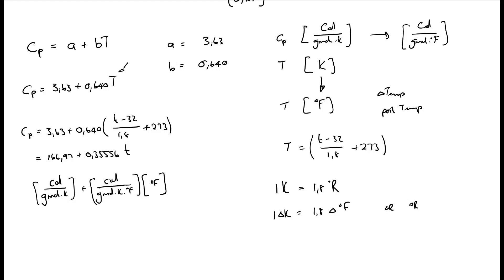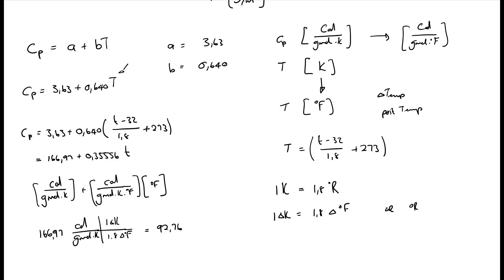To do this last conversion, I now need to say 166.97 calories per gram mole Kelvin. Then I multiply by 1 delta Kelvin divided by 1.8 delta degrees Fahrenheit equals 92.76. And then for the 0.35556 over gram mole Kelvin degree Fahrenheit, 1.8 delta degrees Fahrenheit, and this will now be equals to 0.1975. The new equation will become CP equals 92.76 plus 0.1975 and T, with T in degrees Fahrenheit, and CP in calories per gram mole degrees Fahrenheit.